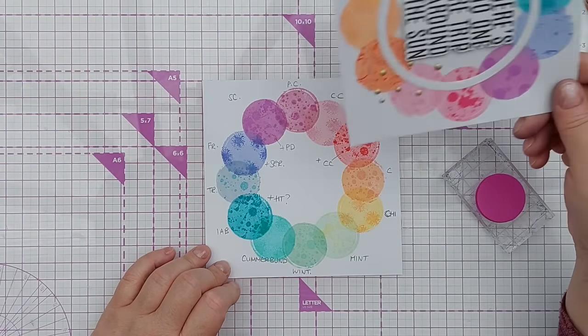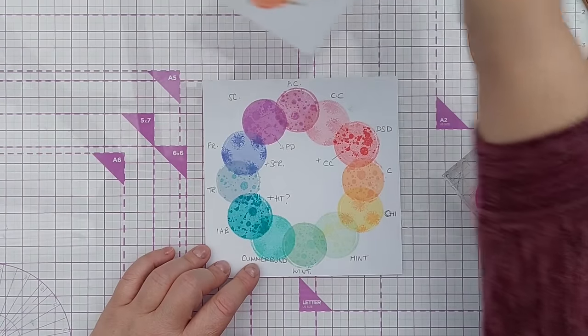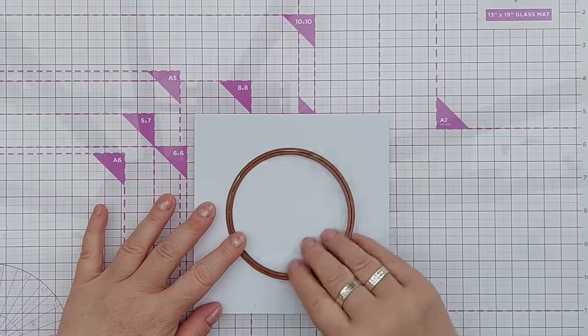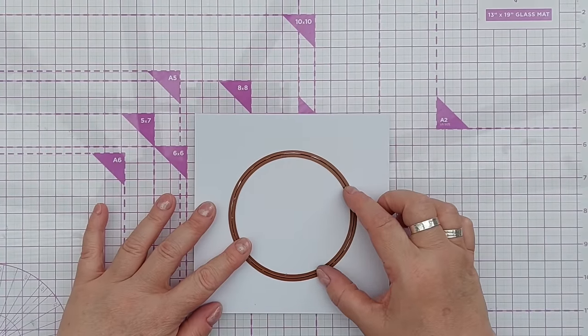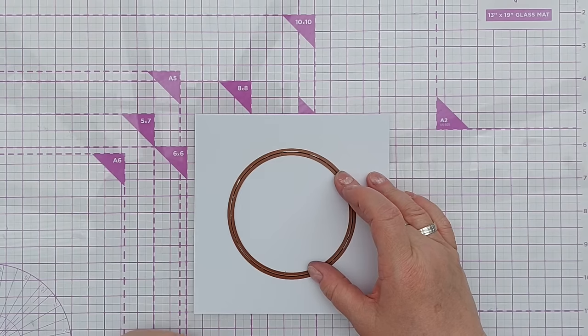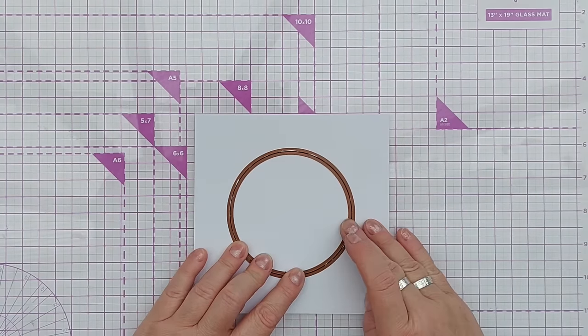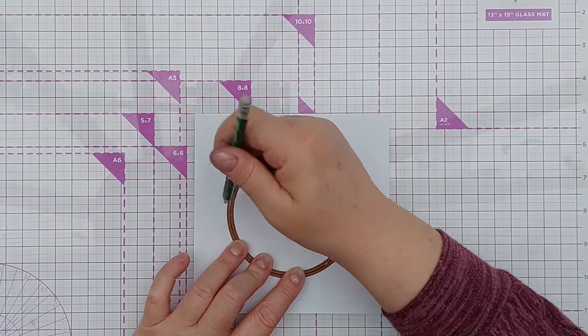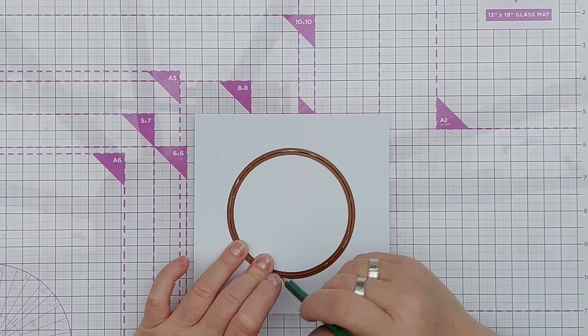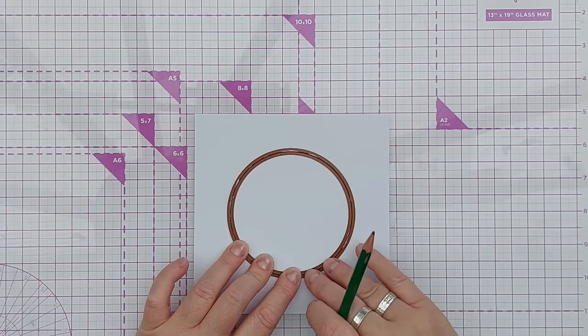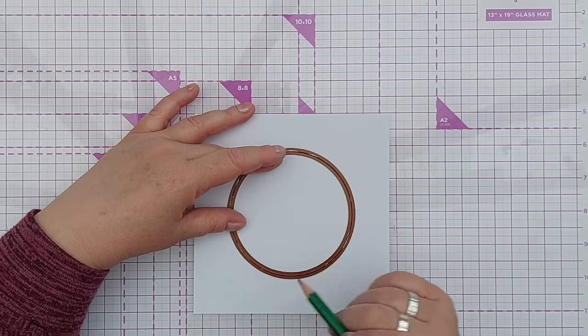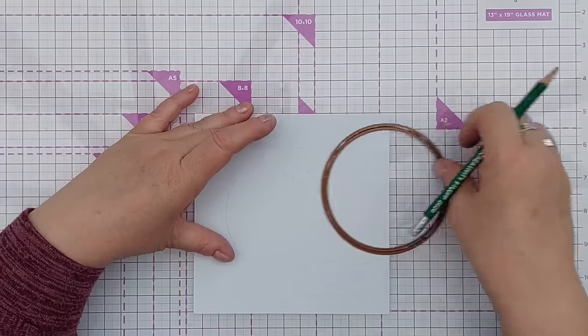So here we go, this is my largest circle die and I've got a six by six inch piece of paper here because that will allow me to fit everything in. I'm just going to eyeball it, put it roughly in the middle and draw ever such a faint pencil line all the way around. Now I've discovered with Catherine Pooler inks you can erase pencil once they're dry.